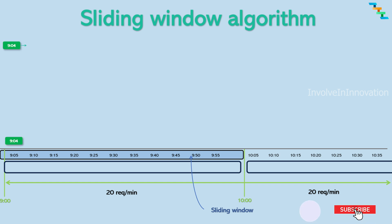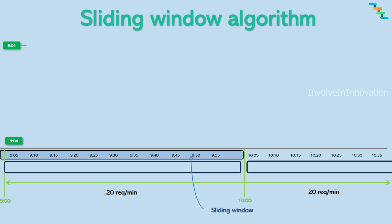When the first request comes in, the linked list is empty, so the request is allowed to be processed and the request timestamp is added to the linked list. When the next request comes in, the head of the linked list is verified to check if it is within the current sliding window range.